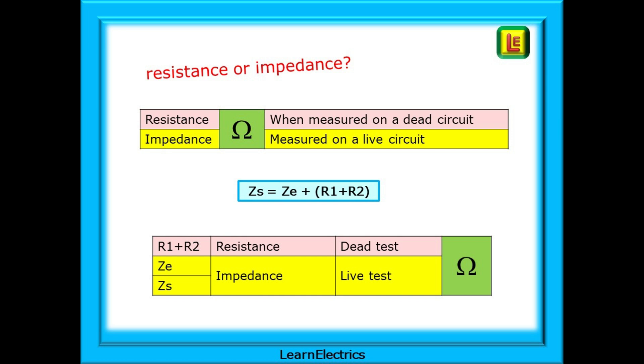When measured on a dead circuit, we call the reading a resistance. If we measure a live AC circuit, it is called an impedance. And some examples are shown here.